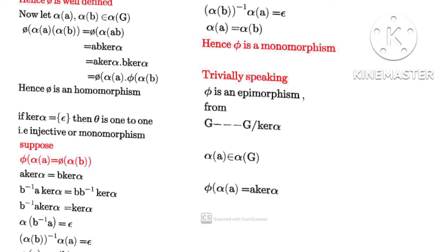For the homomorphism condition, we let α(a) and φ(b) be members of the group. Recalling the definition that φ(a) equals a·ker(α), similarly φ(a)·φ(b) gives us φ(ab), which equals ab·ker(α). This splits into a·ker(α) times b·ker(α), which matches the definition of a homomorphism: φ(a)·φ(b) equals φ(ab).